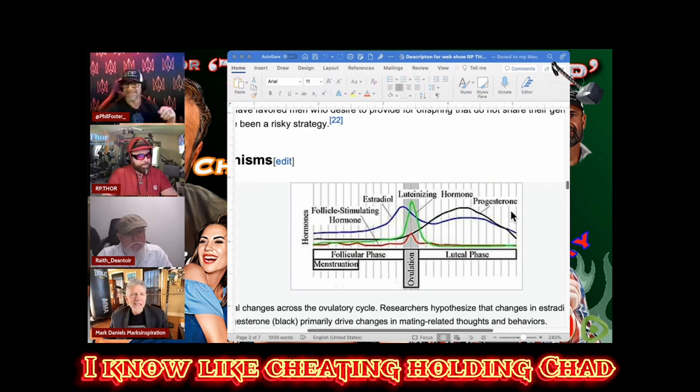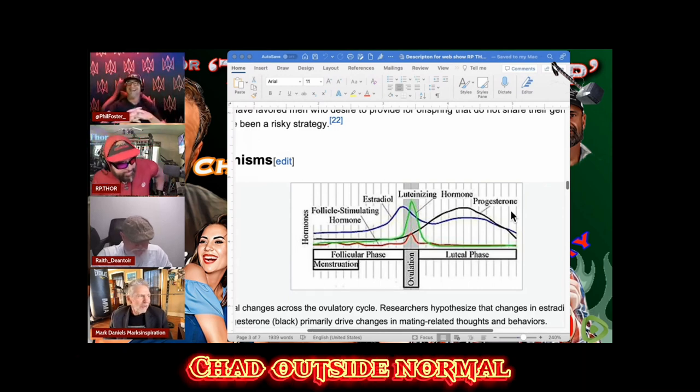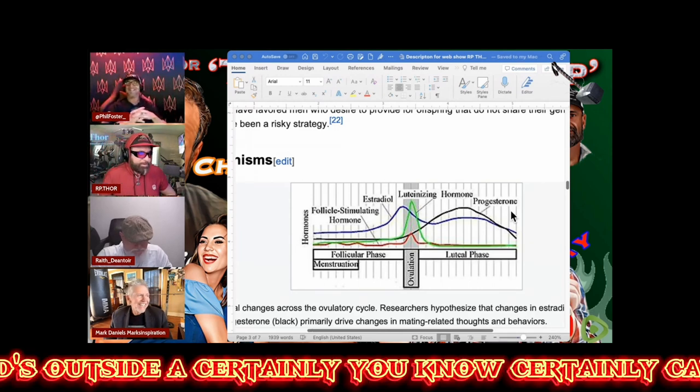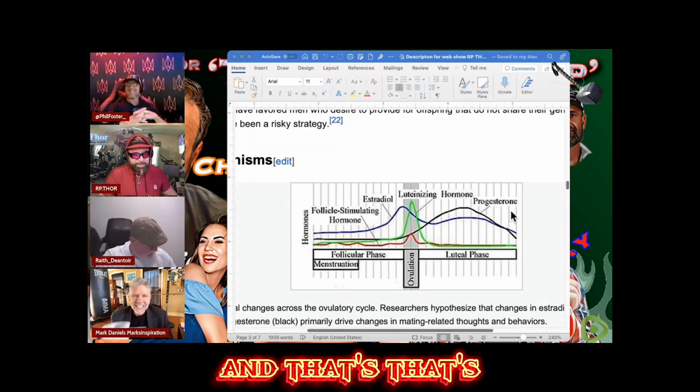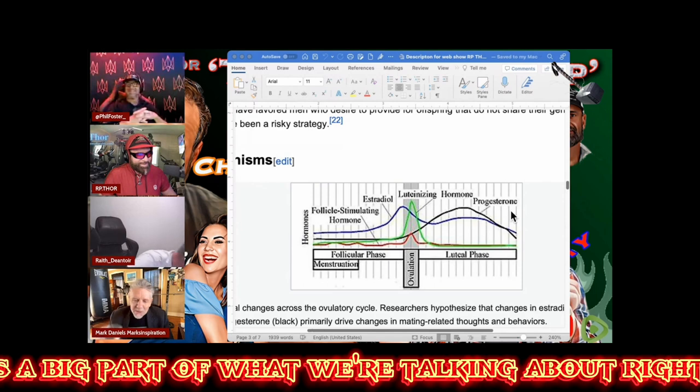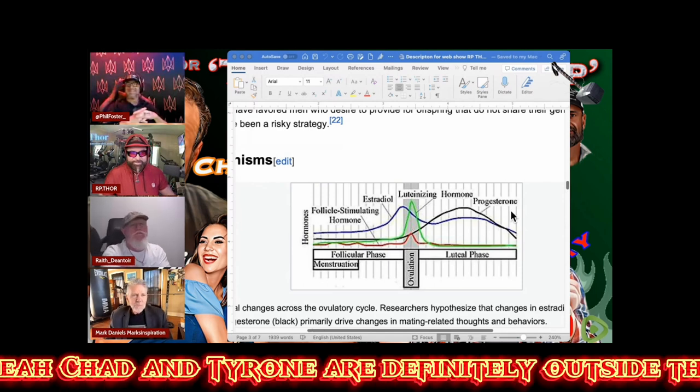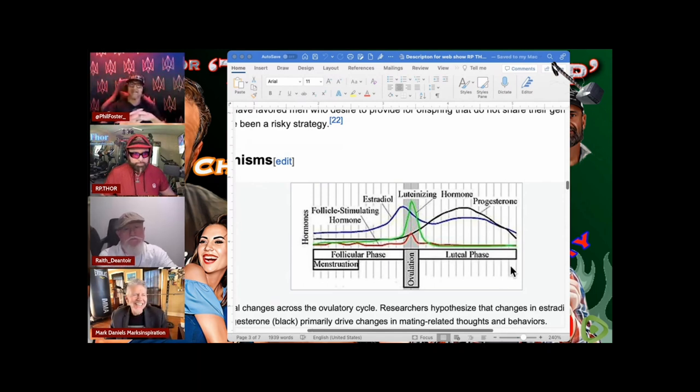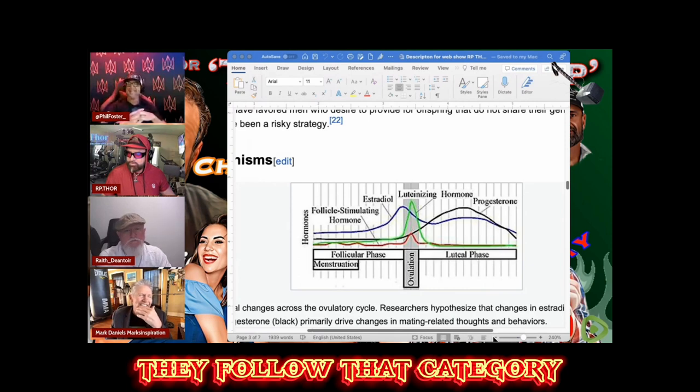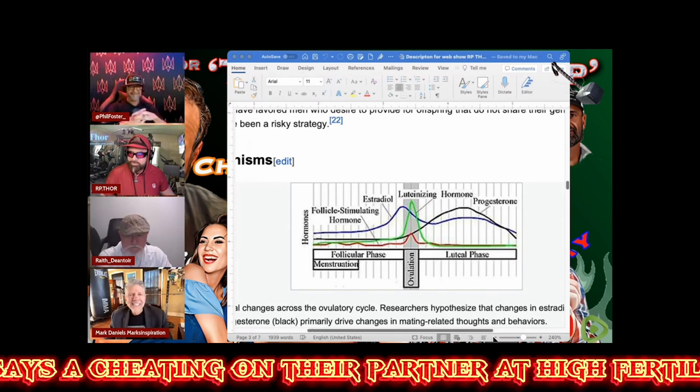An extra-pair copulation would be outside of the normal mating pair. How about cuckolding? Chad is outside the normal pairing. Chad and Tyrone are definitely outside the normal pair. They fall into that category of cheating on their partner at high fertility.